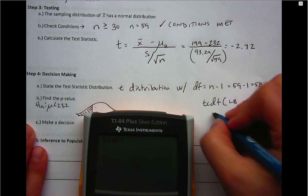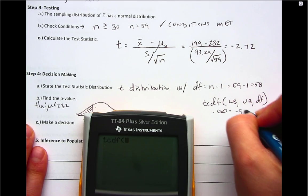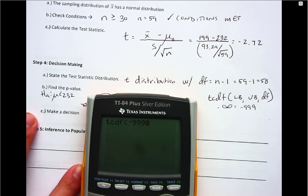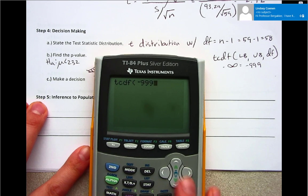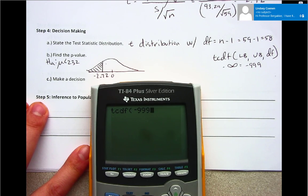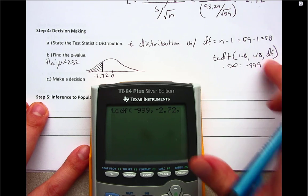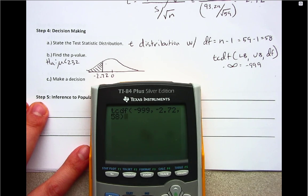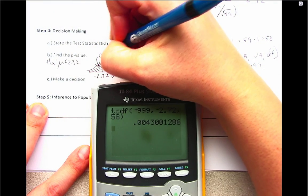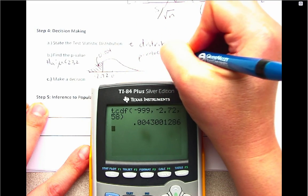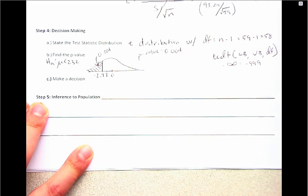If you remember from videos past, for all intents and purposes, negative 999 would be sufficient for that. Then next you want to know where the highlighting ends, so we have negative 2.72, and then finally degrees of freedom, which we found would be 58.